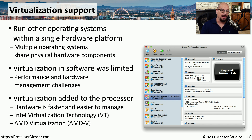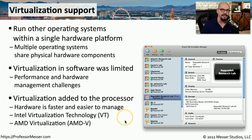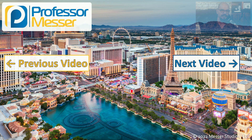If you have an Intel processor in your system, you can check your BIOS and see if it supports the Intel Virtualization Technology, or VT. If you're running an AMD processor, then you may be running AMD Virtualization, or AMD-V. Some virtualization software requires that you enable these capabilities in your CPU, so check your documentation and your BIOS to make sure you're using the proper configurations for your virtualization system.